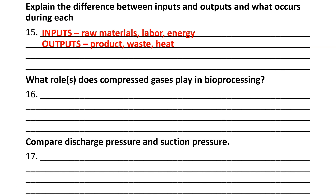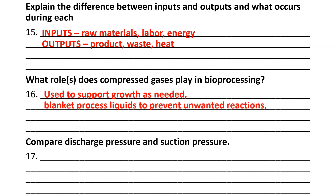What roles do compressed gases play in bioprocessing? There are roughly four. They are used to support growth as needed. They blanket process liquids to prevent unwanted reactions — for instance, oxygen may be needed in some places, but in others it causes unwanted reactions, so we blanket it with an inert gas like nitrogen or argon. They also provide power to operate valves and other equipment. Additionally — and I apologize for leaving this out of the presentation — they are used to transfer fluids.